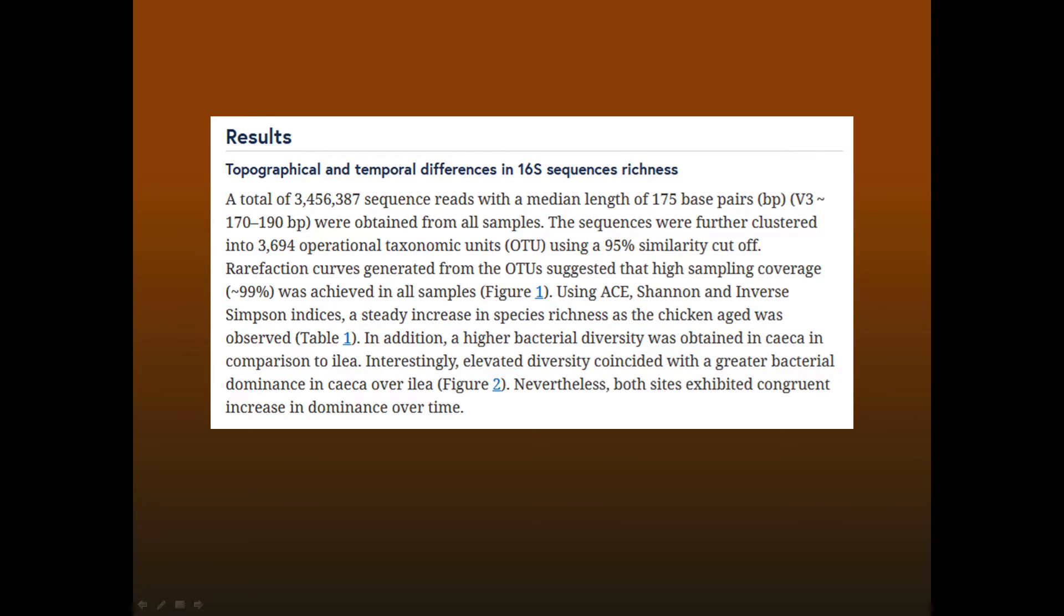Unfortunately, the problems with measuring diversity by 16S sequencing are not well known in the field, and many if not most published papers report questionable results. Here's a typical results section. They report richness. They generate rarefaction curves. They extrapolate richness using the ACE estimator. They calculate the dominance index, which is based on the frequency of the most abundant OTU. None of these can be measured using 16S data, but the paper fails to consider these problems.